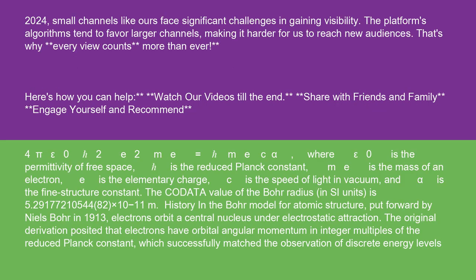equals ℏ²/mₑcα, where ε₀ is the permittivity of free space, ℏ is the reduced Planck constant, mₑ is the mass of an electron, e is the elementary charge, c is the speed of light in vacuum, and α is the fine structure constant.